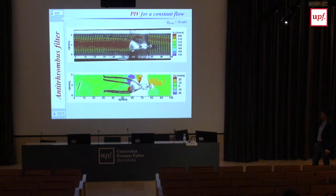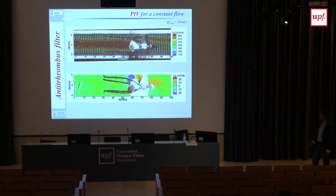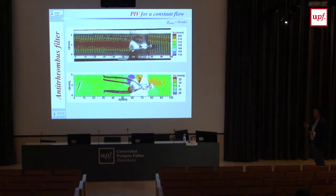We also measured with the thrombus present, and the simulation group did simulations with it. But there was a problem — looking at the filter, the legs of the filter were not the same shape as before. Because we had to remove the vessel, insert the filter, and replace the vessel, the filter got squeezed and it was impossible to restore it to exactly its original shape. This is likely why the comparison was difficult in that case.